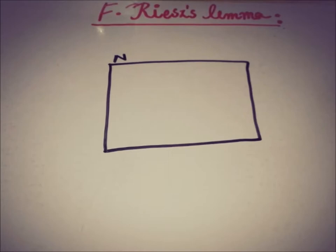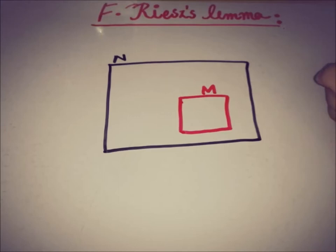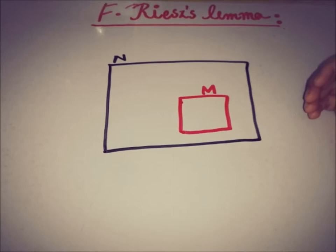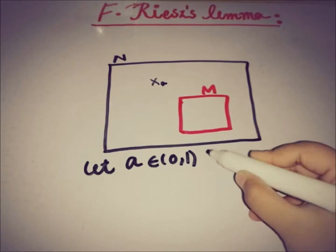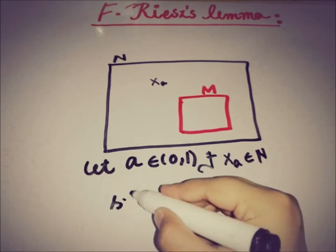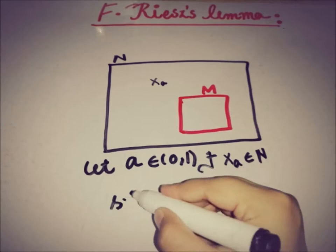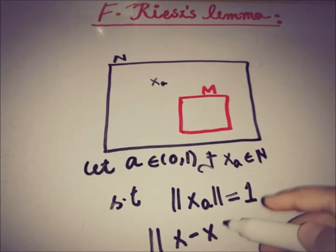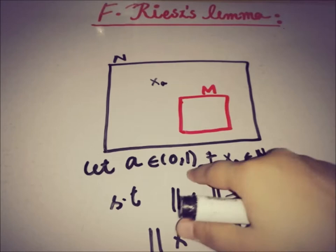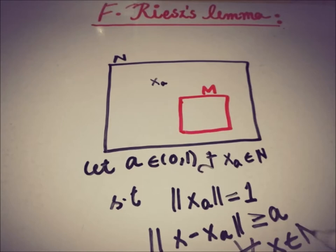Let N be a normed space and M is a proper closed subspace of N. Riesz's Lemma states that if M is a proper closed subspace of a normed space N, and we take a real number a in between 0 and 1, then there must exist an element x_a in N such that the norm of x_a is 1, and the norm of the difference of x_a with every element of M is greater than or equal to a, for all x in M.